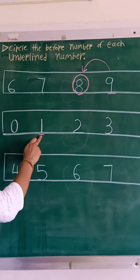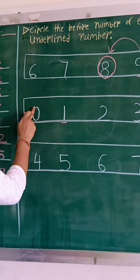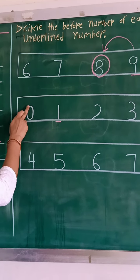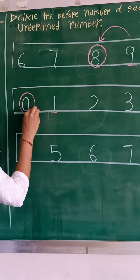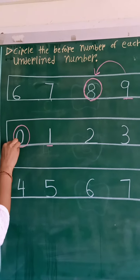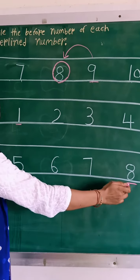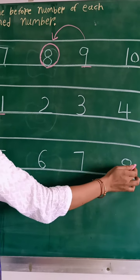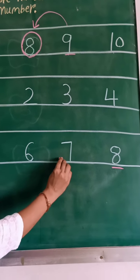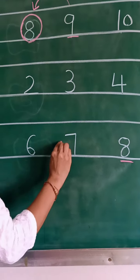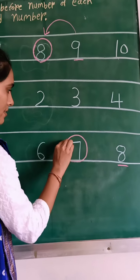Next one is number 1. Which number comes before 1? 0. Circle on 0. Next and last one is number 8 — number 7. Circle on number 7.